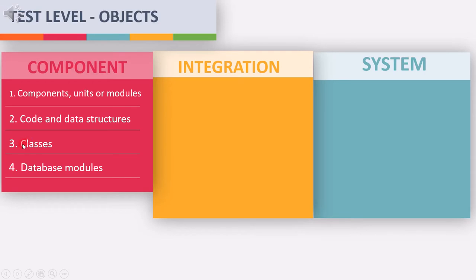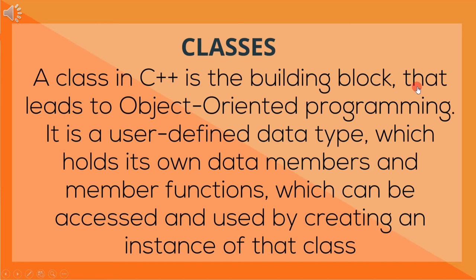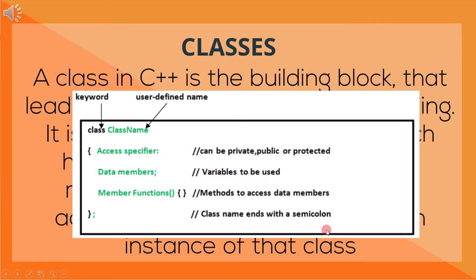The third test object is classes. A class in C++ is the building block that leads to object-oriented programming. It is a user-defined data type which holds its own data members and member functions, which can be accessed and used by creating an instance of that class. This example of a class has a keyword, user-defined name, and a body consisting of data members and member functions. In component testing, we can test these data members by changing their values and each of the member functions.